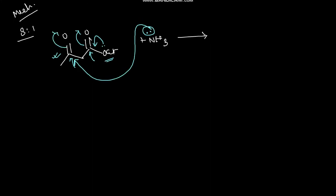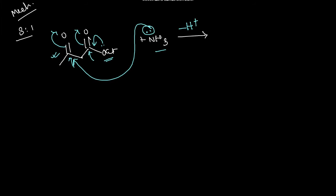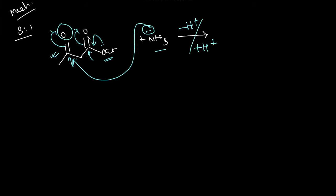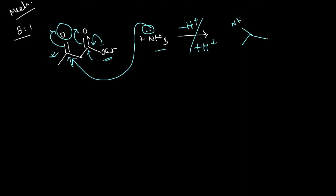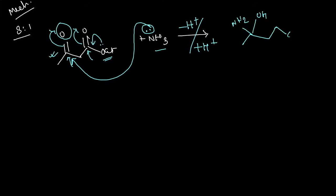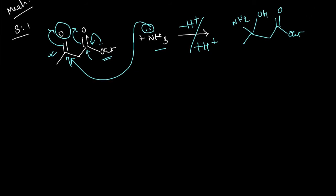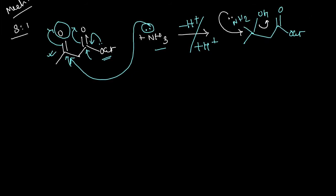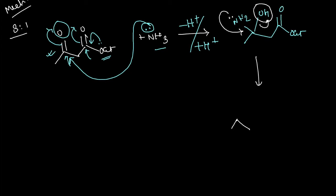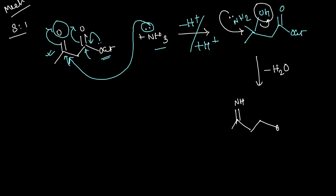After ammonia attacks, a positive charge appears on the nitrogen. An H+ is released and taken up by the oxygen, giving an OH and an OEt group. In the next step, water is eliminated: a positive charge forms, H+ is released from nitrogen, a water molecule leaves, and a C=N (imine) double bond forms, giving the imine product with a CO2Et group.